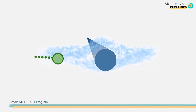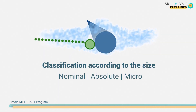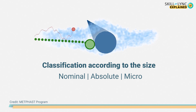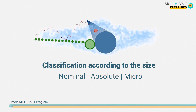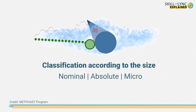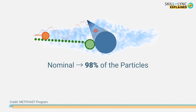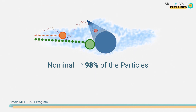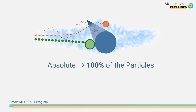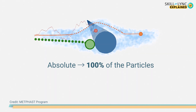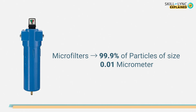Another classification of filters is done according to the size of particles they can filter. The size of the particles is measured in microns or micrometers. Filters with a nominal rating will block 98 percent of the particles, while a filter with an absolute rating will block 100 percent of the particles of the specified size.